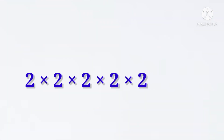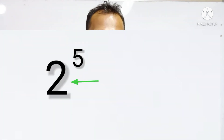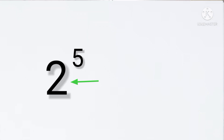In this example, 2 times 2, times 2, times 2, times 2. We will start with the index formula. 2 to the power 5 — read it down. We will start with the index numbers.